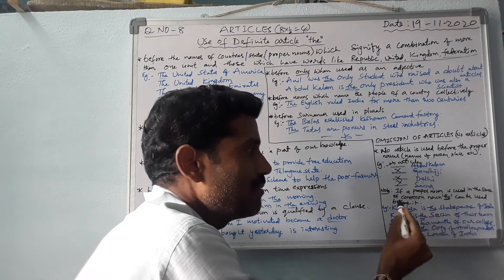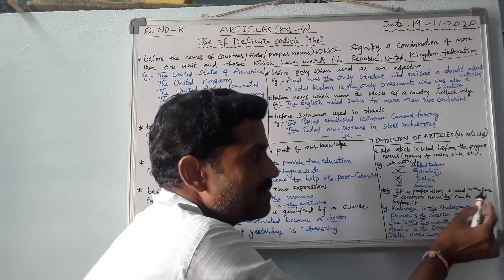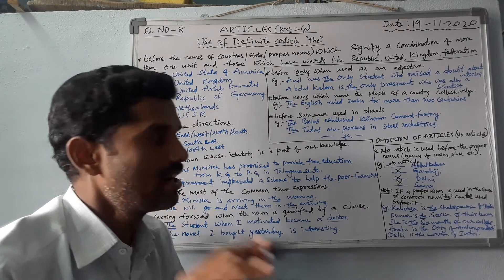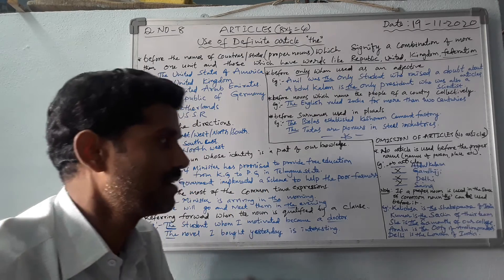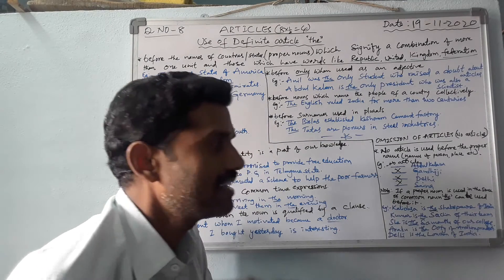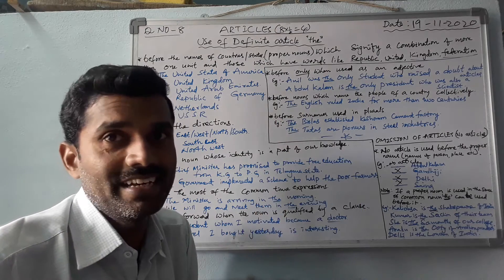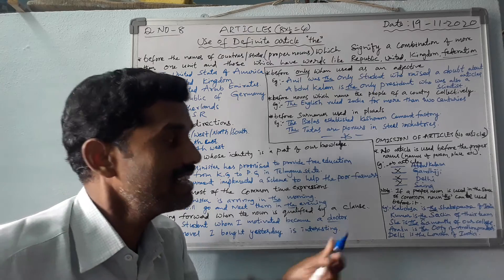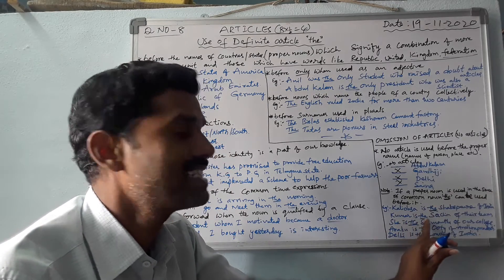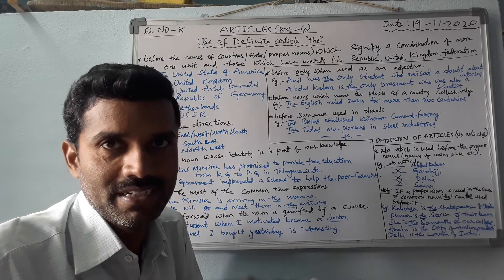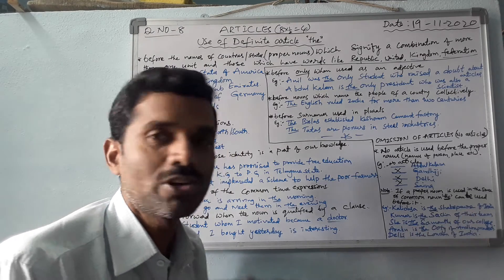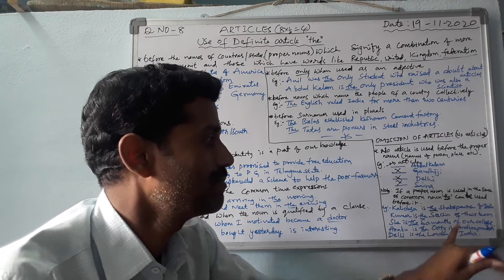Note: If a proper noun is used in the sense of a common noun, 'the' can be used before it. For example: 'Kalidas is the Shakespeare of India.' Shakespeare is a world famous dramatist and writer — Kalidas is the Indian Shakespeare. 'Kumar is the Sachin of their team' — if someone plays like Sachin or Kohli, we say 'He is the Kohli of our team' or 'He is the Dhoni of our team.' 'She is the Samantha of our college' — meaning she is as beautiful as Samantha.